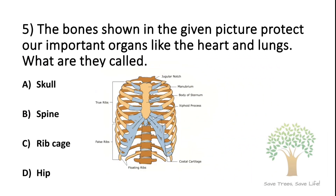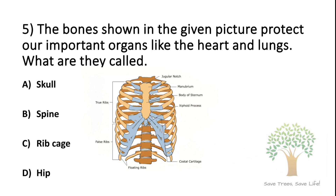Question number 5. The bones shown in the given picture protect all important organs like the heart and lungs. What are they called? Option A: skull. Option B: spine. Option C: ribcage. Option D: hip. The answer is Option C, ribcage.